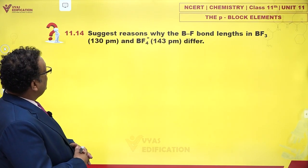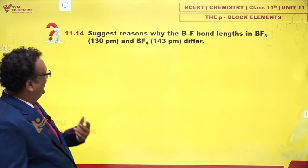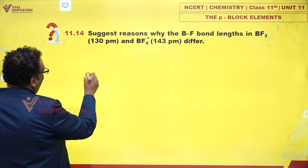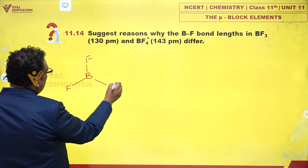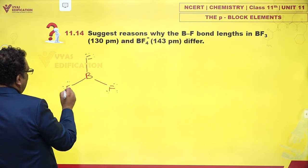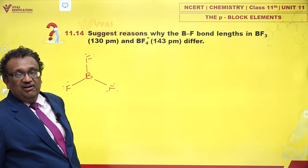Suggest the reasons why B-F bond lengths in BF₃ and BF₄⁻ differ. In BF₃, there is a small beautiful aspect. This looks like the structure, but what happens is a little different.